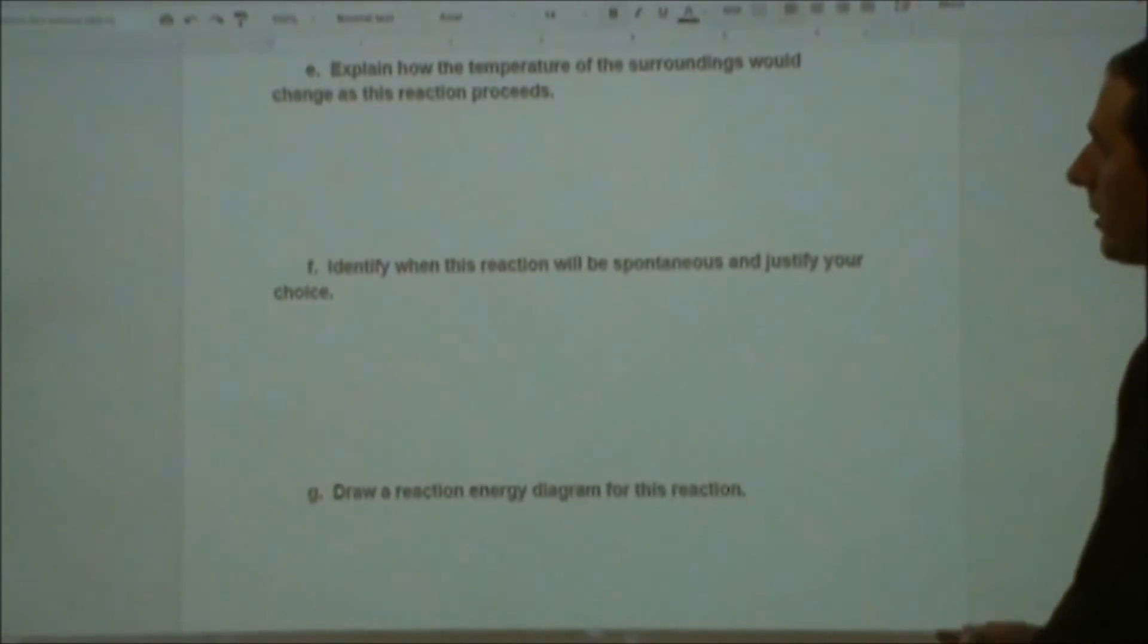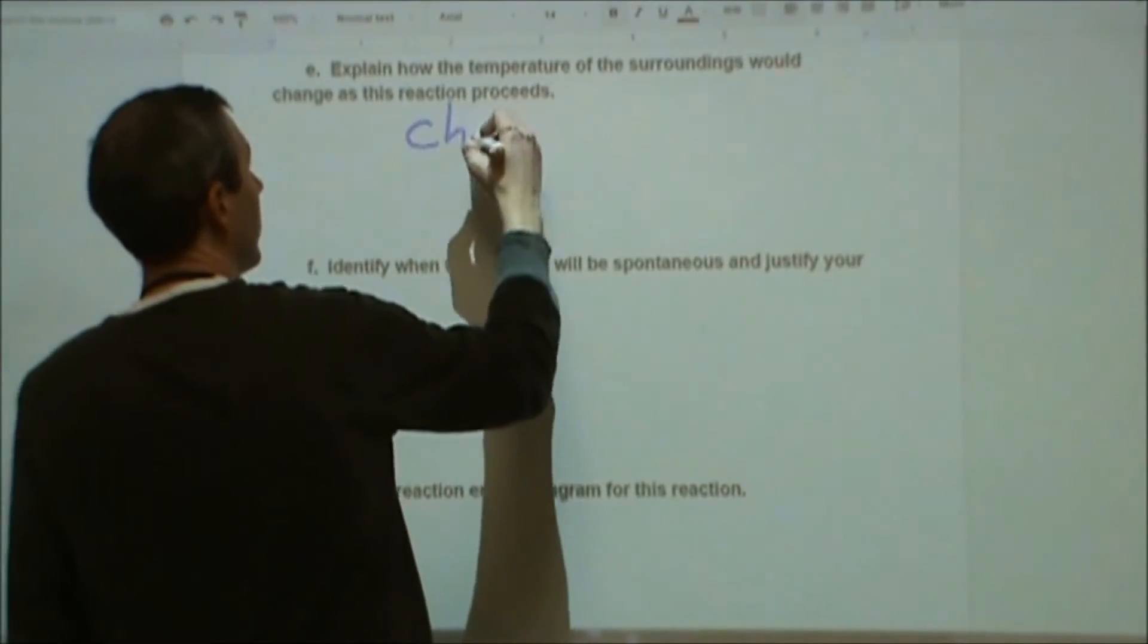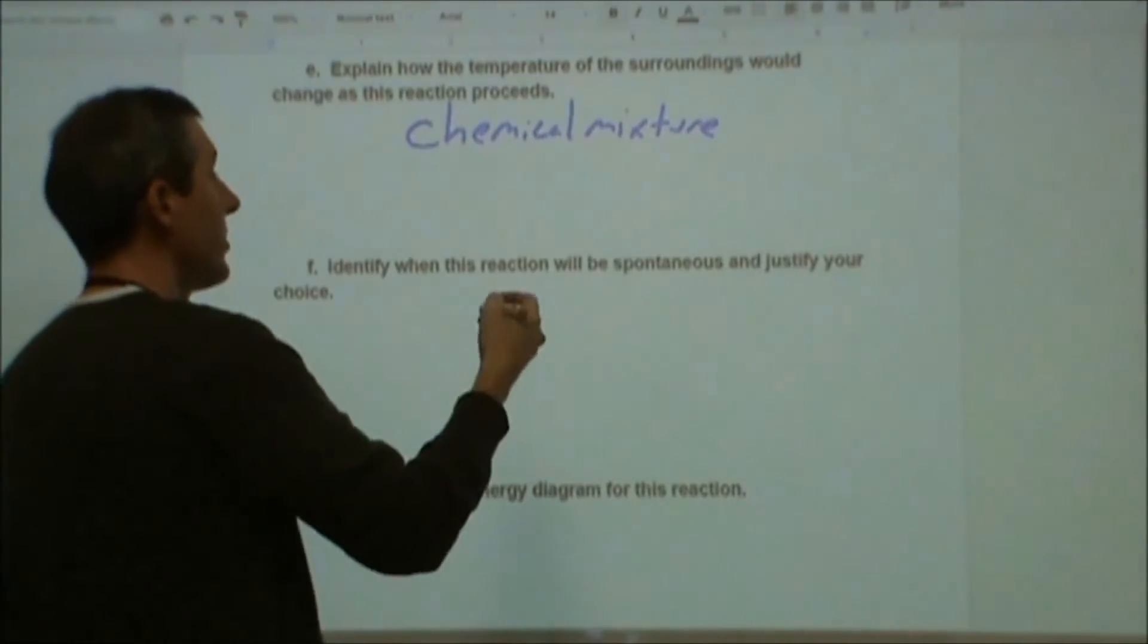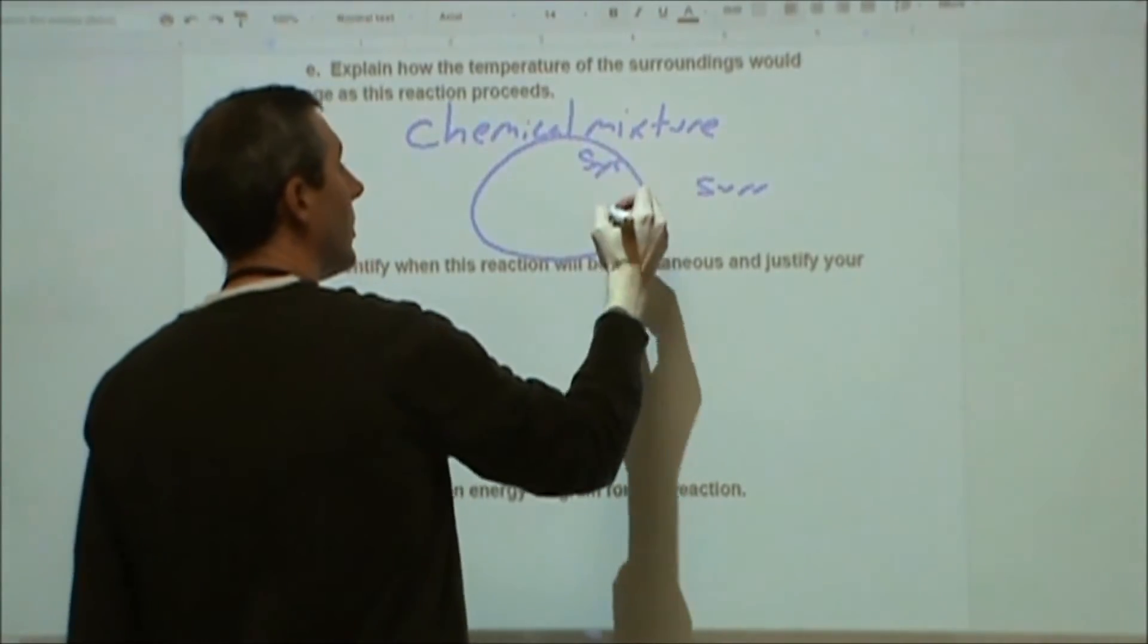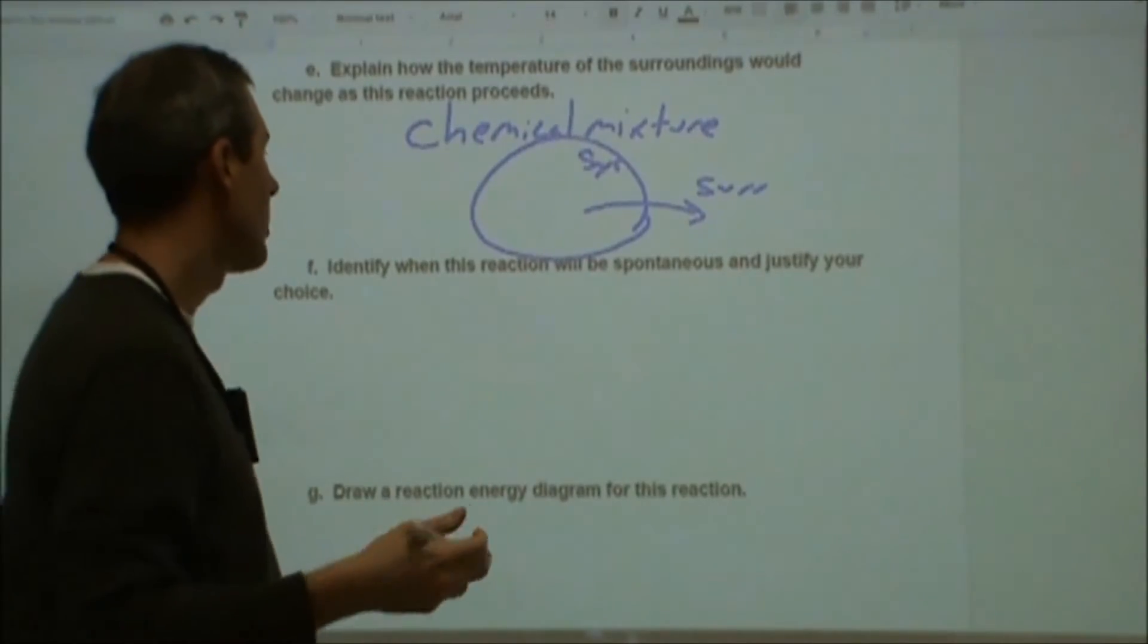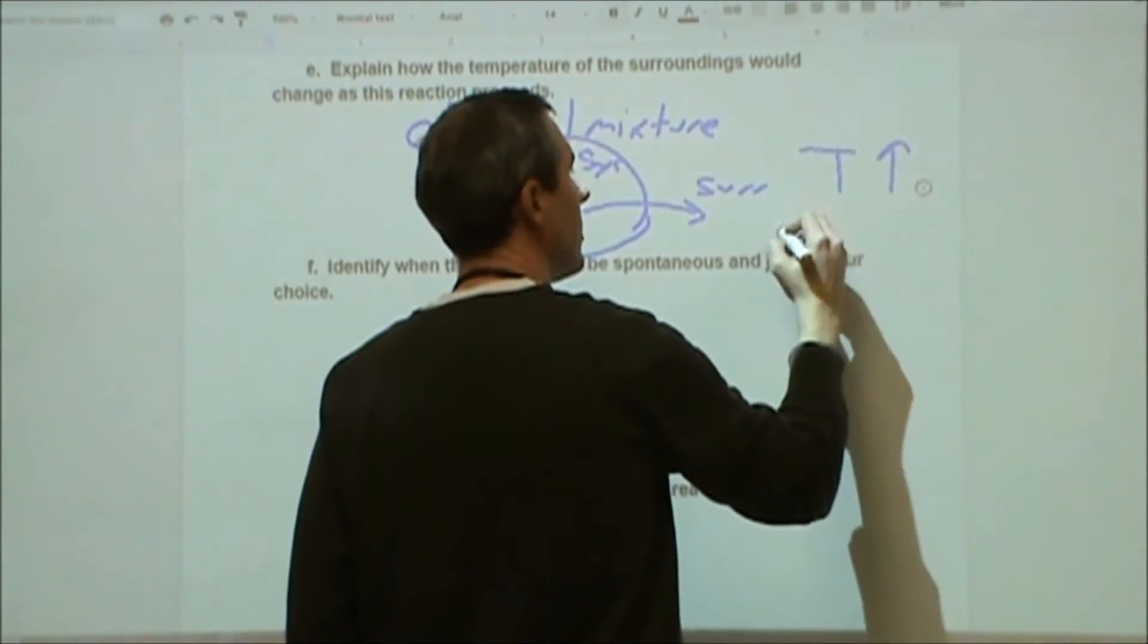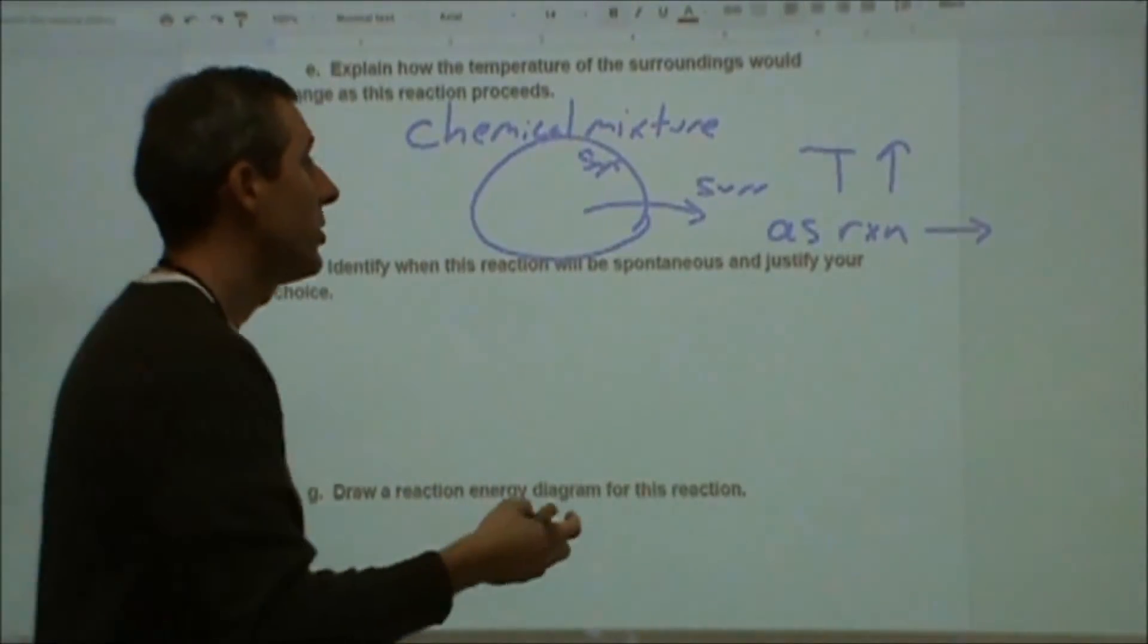In part E it says explain how the temperature of the surroundings would change as the reaction proceeds. So if we're looking at the chemical mixture as our system, and I want to know what's going to happen to the temperature of the surroundings. What I'm basically saying is here's my mix of chemicals, here's the surroundings. We are sending energy from the system to the surroundings. The fact that we have a negative enthalpy change means that our chemical rearrangement is causing energy to be released to the surroundings.